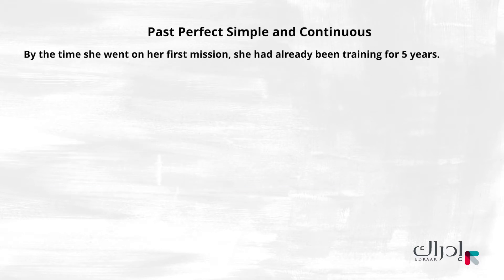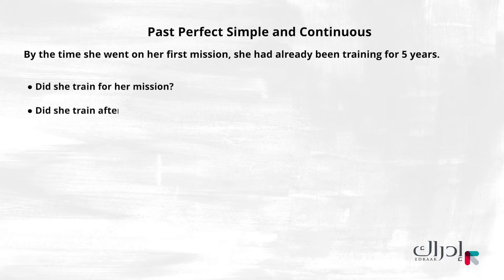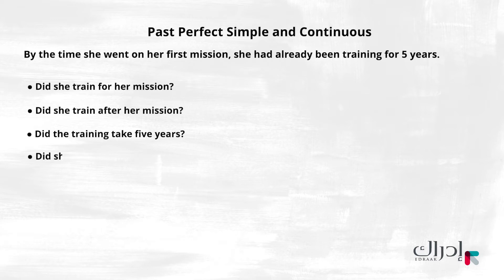Let's ask some questions about this sentence. Did she train for her mission? Did she train after her mission? Did the training take five years? Did she stop training to go on the mission?